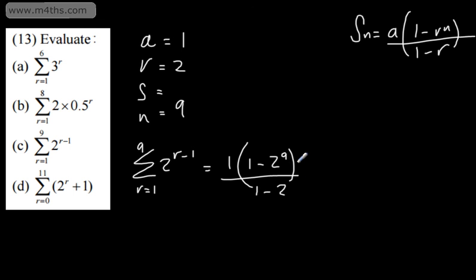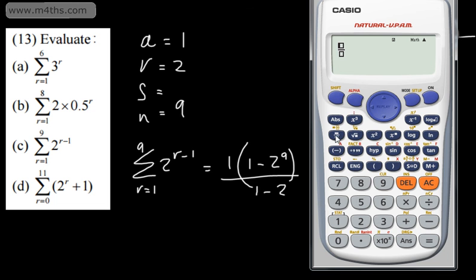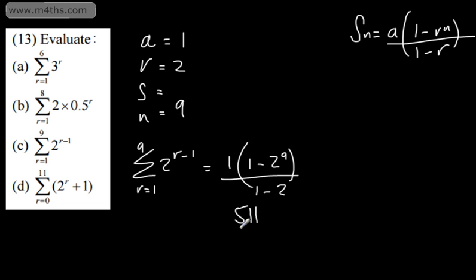Looking at this, we have (1 minus 2⁹) over negative 1. Since 2 to the 9th is 512, then 1 minus 512 is negative 511, and dividing by negative 1 gives 511. So the answer is 511.